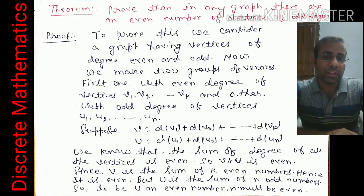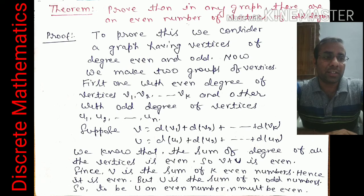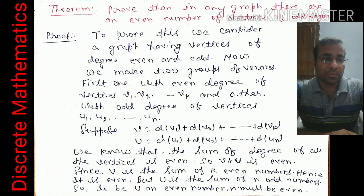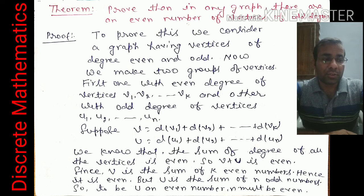Proof: consider a graph having vertices of both even and odd degree. We make two groups — one group with even-degree vertices v1, v2, ..., vk, and another group with odd-degree vertices u1, u2, ..., ul.